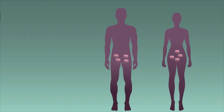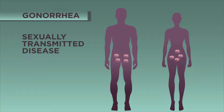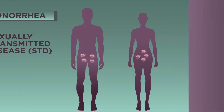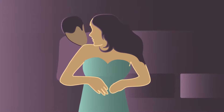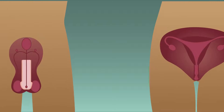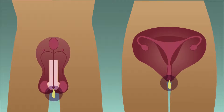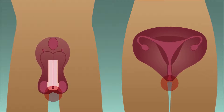Another infectious disease caused by bacteria is gonorrhea. This is a sexually transmitted disease, or STD for short. It is passed from person to person by sexual contact. The early symptoms include a thick yellow or green discharge from the vagina or penis, and pain on urination.